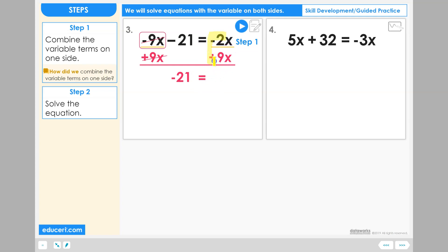Here we combine these two terms. Negative 2 and positive 9 is going to be 7 in the positive direction. So positive 7x is what remains on the right side. Step 1 is complete because we have combined the variable terms to one variable term on one side over here on the right.